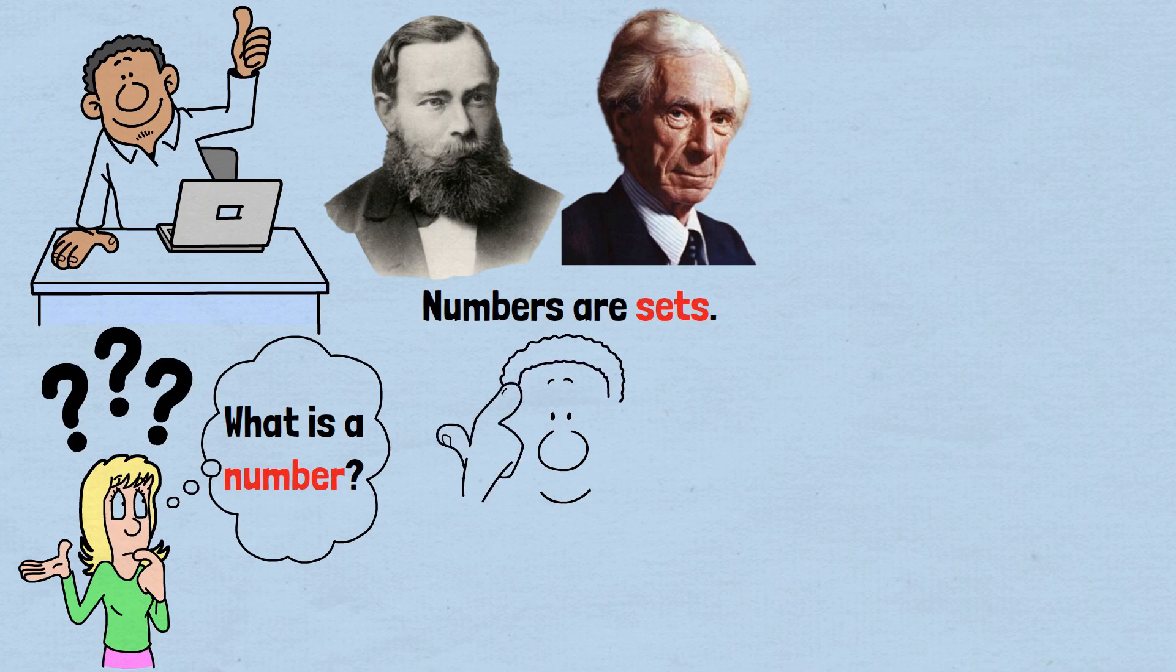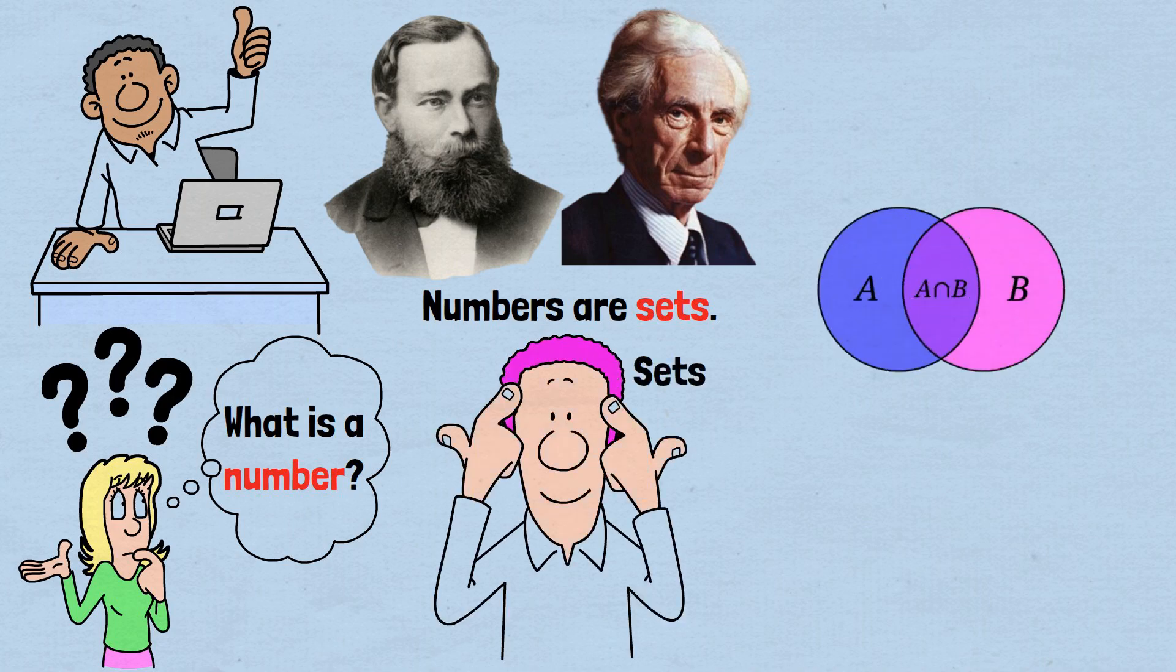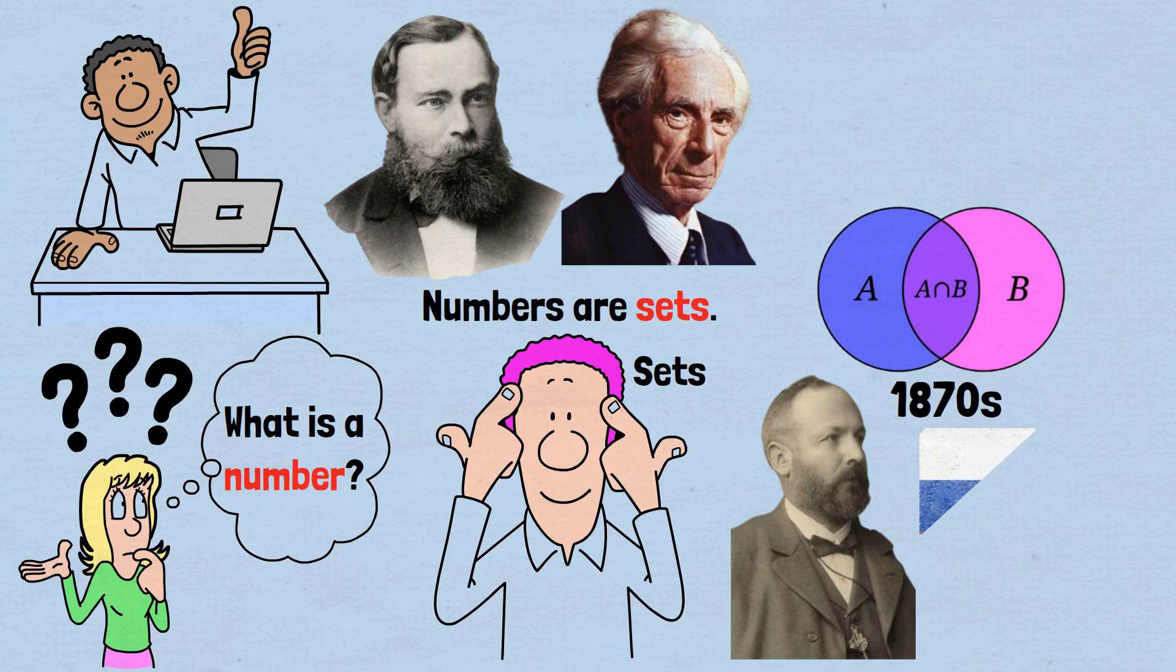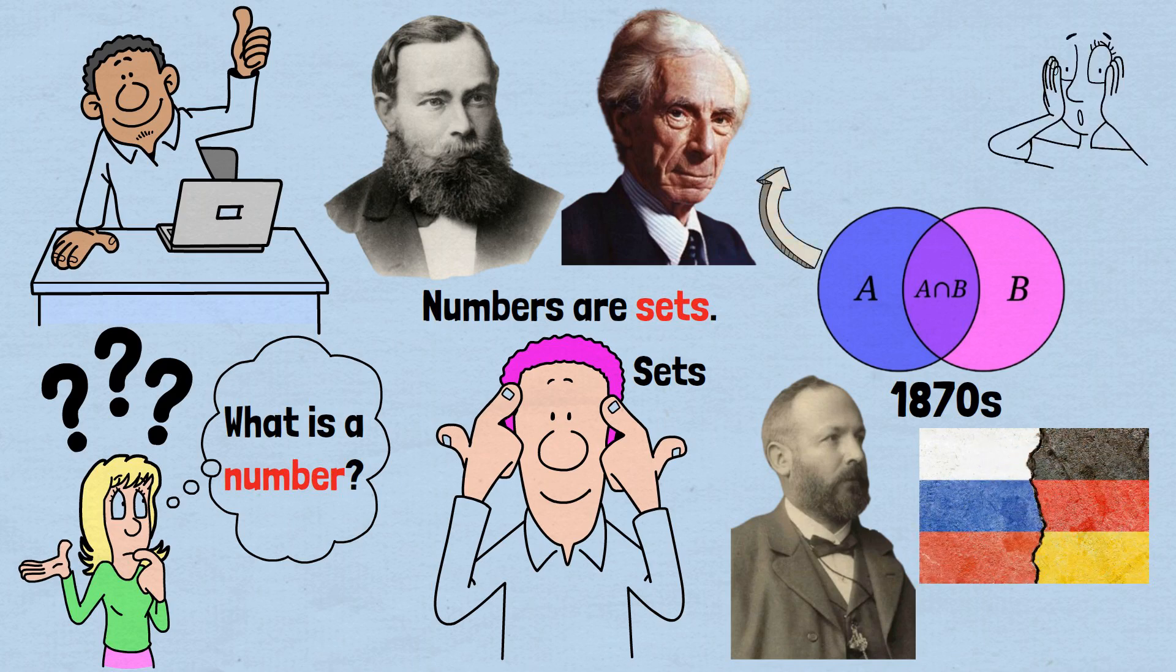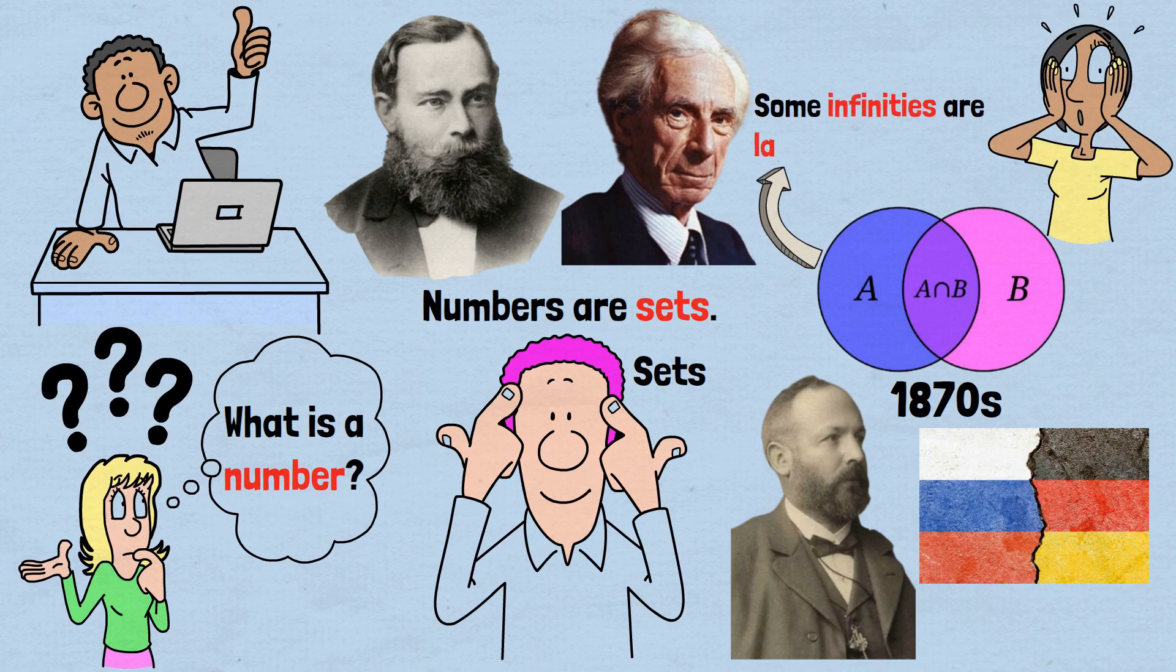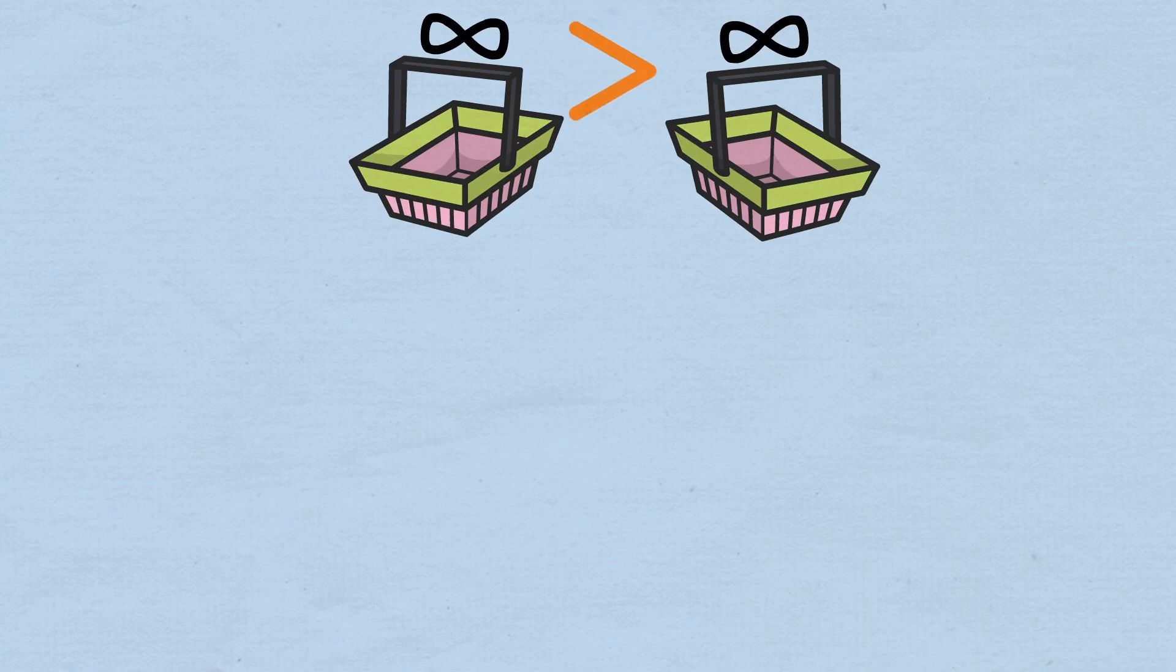To understand Russell's paradox, we first need to understand sets. Set theory was developed in the 1870s by Georg Cantor, a Russian-German mathematician. Using set theory, Cantor proves something utterly mind-bending. Some infinities are larger than others. Yes, you can have an infinite collection of one thing and an infinite collection of another thing, yet have more of one than the other.